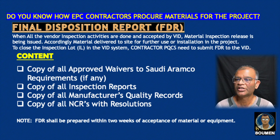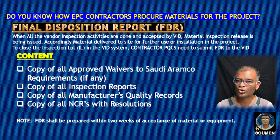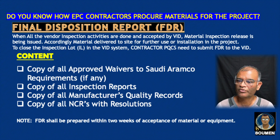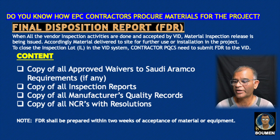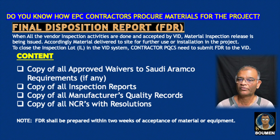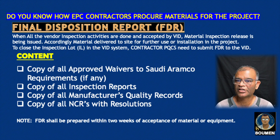To close the inspection lot in the VID system, the contractor's PQCS (Procurement Quality Control Supervisor) must submit the Final Disposition Report (FDR) to VID. The FDR contains: copies of all approved waivers to Saudi Aramco requirements if any, all inspection reports, all manufacturer quality records, and all NCRs/EDRs with resolutions and proper closure documents. The FDR shall be prepared within two weeks of acceptance of the material or equipment. Site inspectors also require this document when conducting site material receiving inspection.